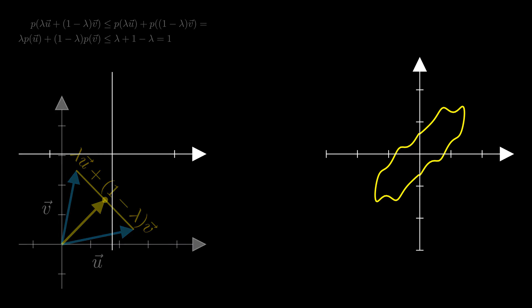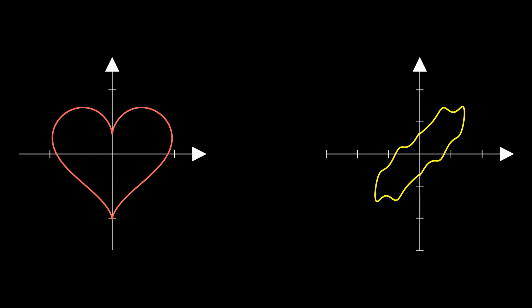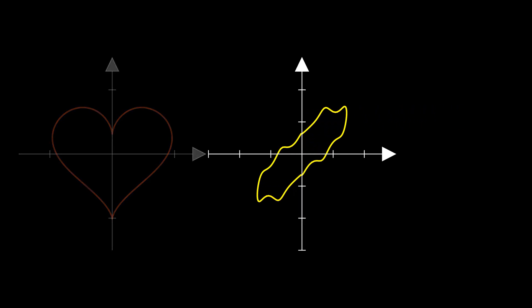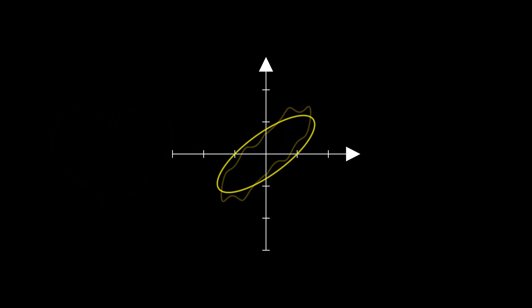So unfortunately, we can't have a norm with the unit circle being a heart. Now it will be easier for us to understand a very important property of norms on the plane. They are all equivalent.